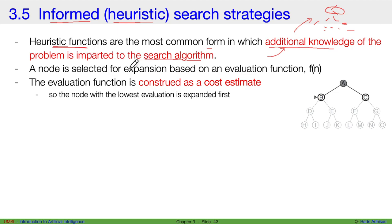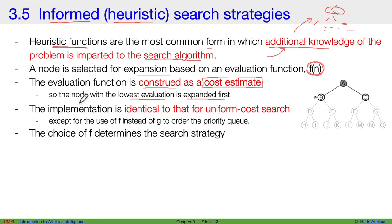All search algorithms differ only in the way they select the next node for expansion. In case of informed search strategies, the node selected for expansion is based on an evaluation function f(n), which is construed as a cost estimate — giving you an idea of how far you are from the goal. The node with the lowest evaluation is expanded first. The implementation is identical to uniform cost search using a priority queue, except we use the function f instead of g.